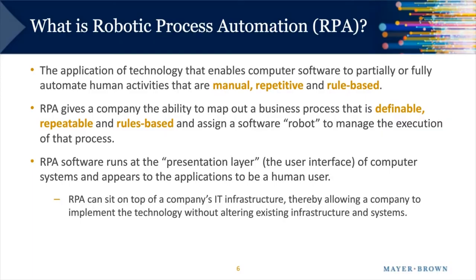What is robotic process automation, or RPA? RPA uses software to partially or fully automate human activities that are manual, repetitive, and rule-based. This can reduce costs, improve accuracy, and improve cycle times because RPA can run 24/7 and can be rapidly scaled up. One of the powerful advantages of RPA is that it can work with your existing systems — it operates as a replacement for a human user at the presentation layer. Implementing RPA doesn't require a company to incur great expense or alter its existing infrastructure and systems.